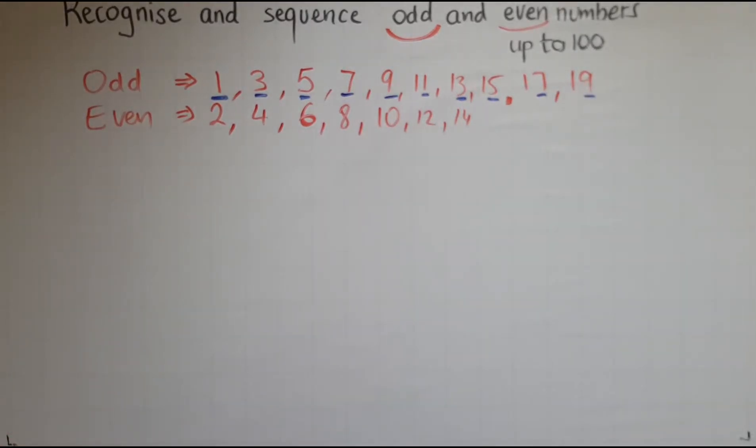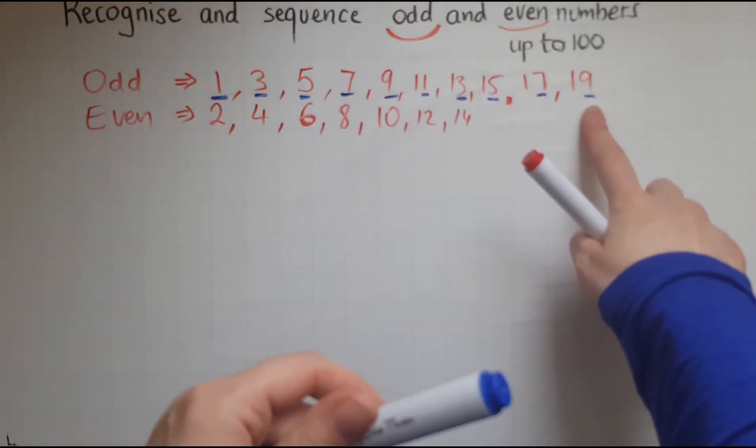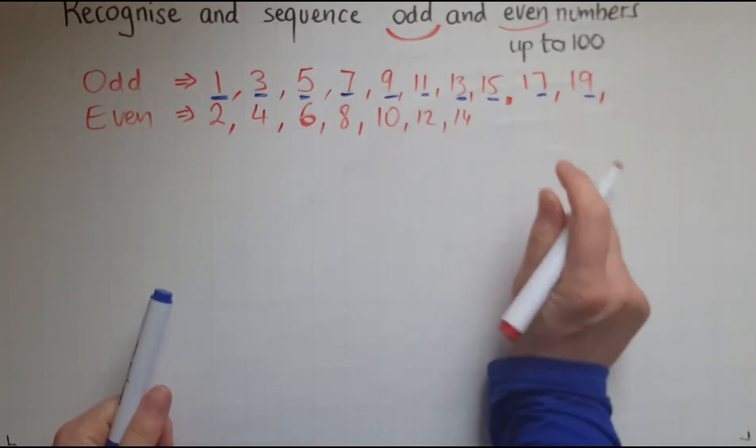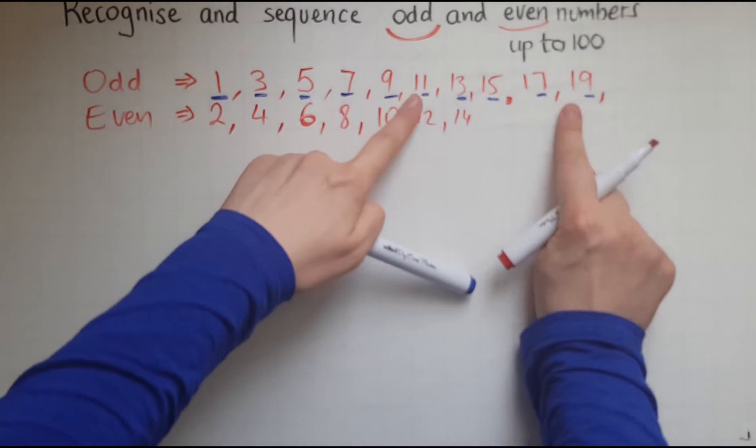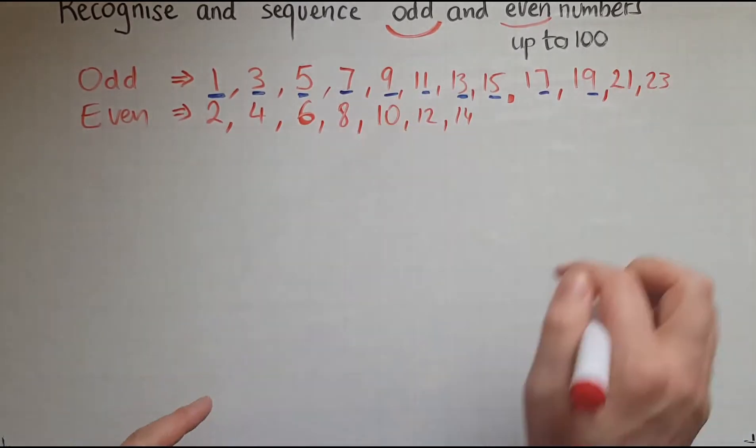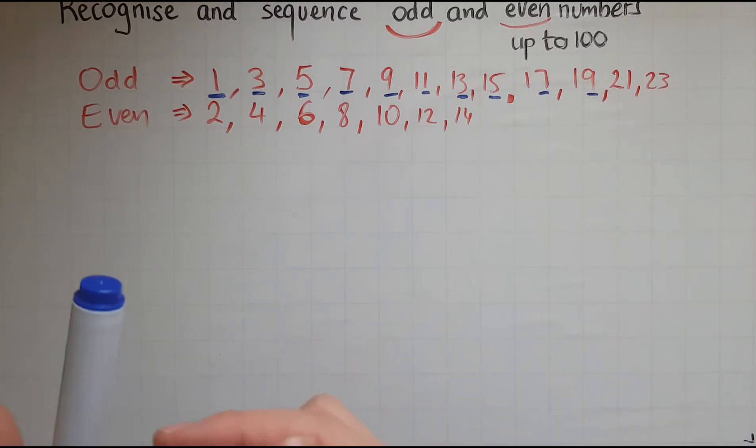So the unit is staying the same. So you can now predict what's going to be the next one. So we've finished there. It's going to be 21, 23. So the unit is all the time the same.